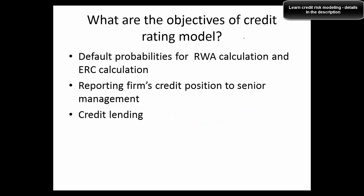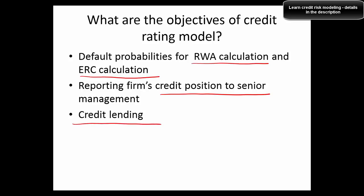What are the objectives of building a credit rating model? The main objectives are: calculation of default probability for RWA calculations, economic risk capital (ERC) calculations, reporting a firm's credit positions to senior management, and supporting credit lending decisions.